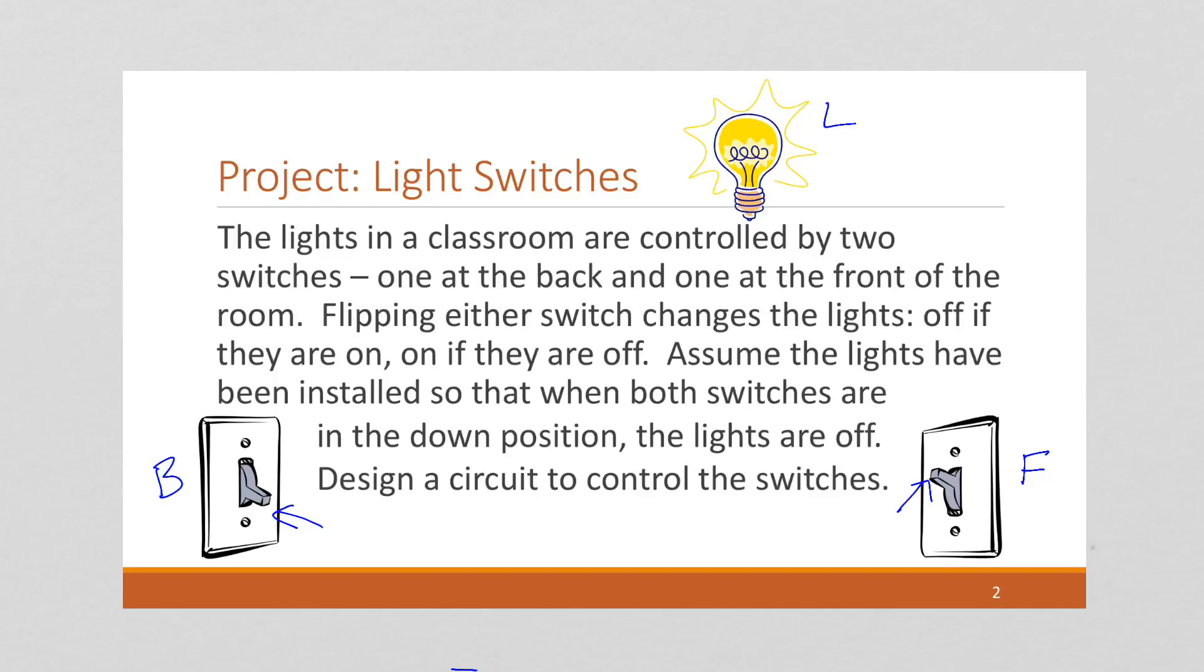Assume the lights have been installed so that when both switches are in the down position, the lights are off. When both switches are in the down position, the lights are off. That's actually going to be really important to how we start our circuit. We want to design a circuit to control the switches.